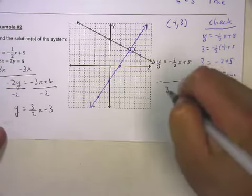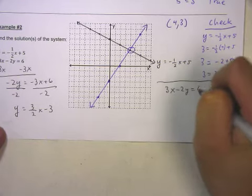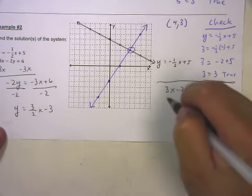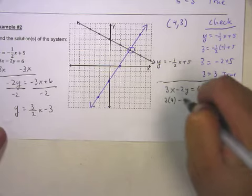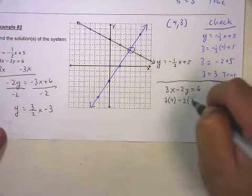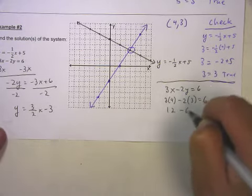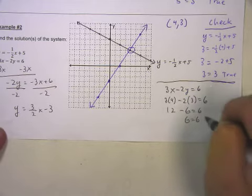All right? So the second equation was 3x minus 2y equals 6. And let's replace x with 4 and the y with 3. So we have 12 minus 6 equals 6. That is true.